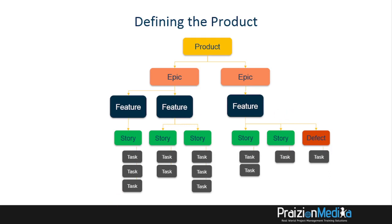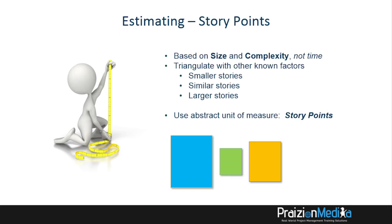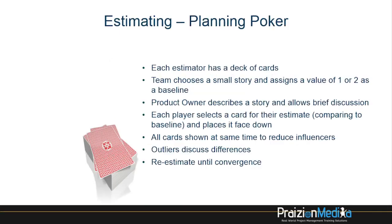Under that, some teams actually decide to get to the task level, but this is not a level we dwell on in the world of Agile on a lot of teams. The way we estimate our work is different — we do not estimate our work in durations. We use other measures when we are estimating stories. The way we estimate stories in the world of Agile uses a couple of methods. First of all, we use story points. Story points are not based on duration; they're based on size and complexity. A lot of teams will use planning poker. Each estimator has a deck of cards, the team chooses a small story and assigns a value.